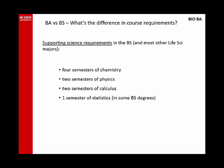In creating the BA in Biology, we first removed some of the supporting science requirements. So if you compare the four semesters of Chemistry, two semesters of Physics, two semesters of Calculus in the Bachelor of Science degree paths, we have cut back on each of these categories of Foundational Sciences. We did keep the one course requirement in Statistics.